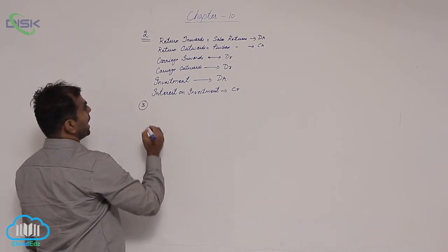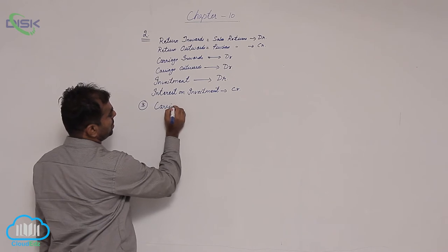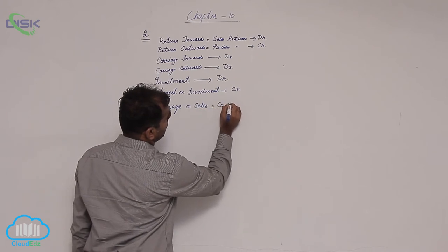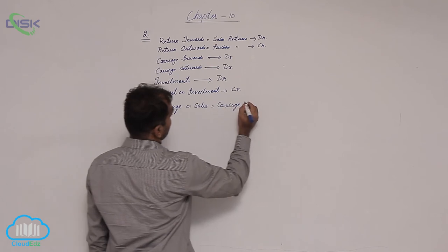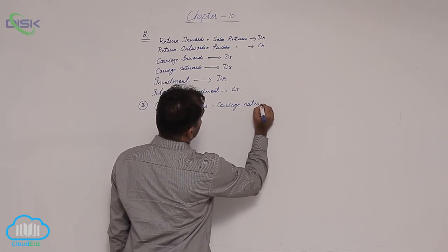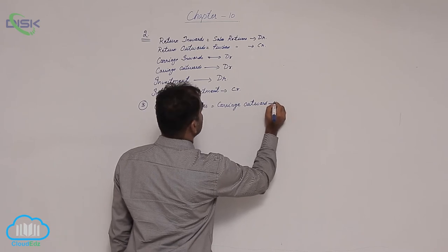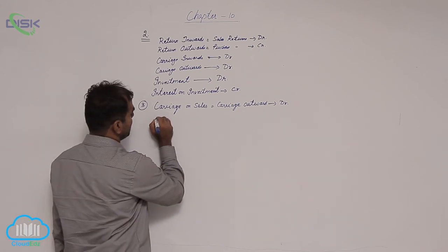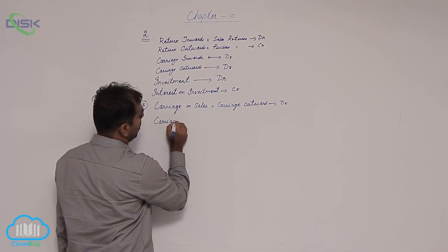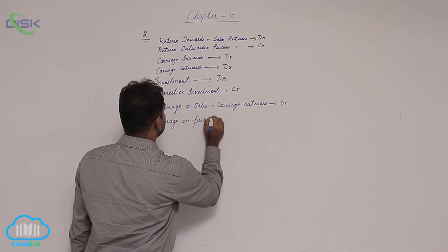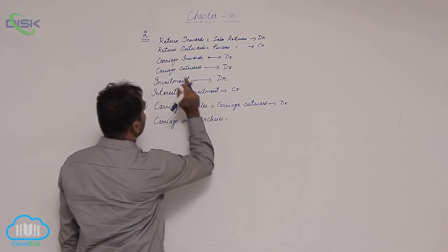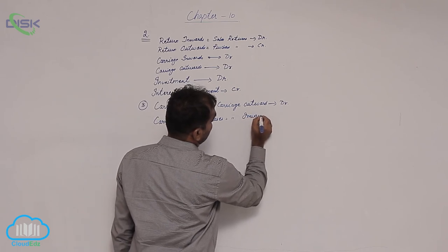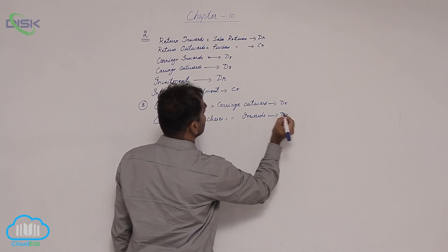Then you have the term carriage on sales. Carriage on sales is nothing but carriage outward, which we discussed in problem number 2. Carriage outward is an expense, therefore it shows debit balance. Next, you have carriage on purchases, which is nothing but carriage inwards. Carriage inwards is again an expense which shows debit balance.